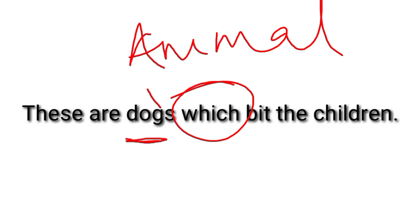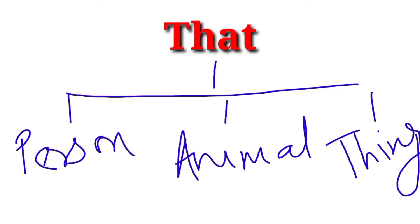Which is used for animals and things. For example: these are dogs which beat the children. Here we see that the word which, working as a relative pronoun, is referring to dog, which is an animal.